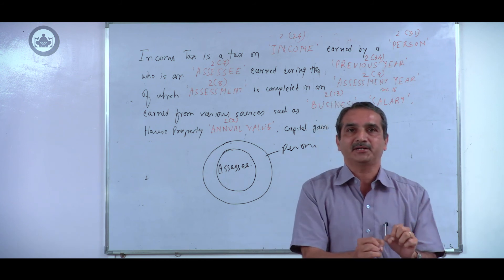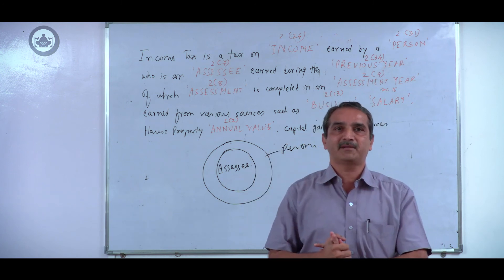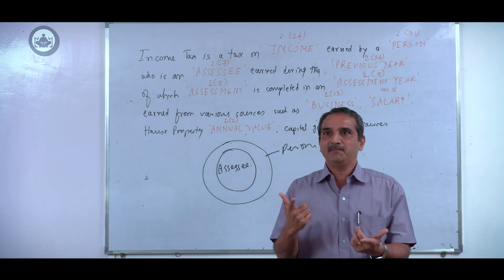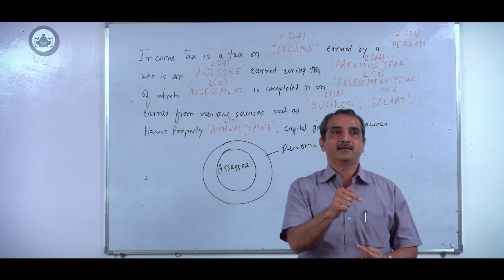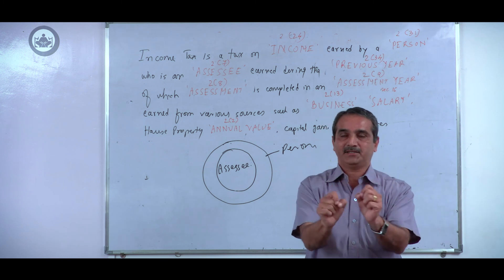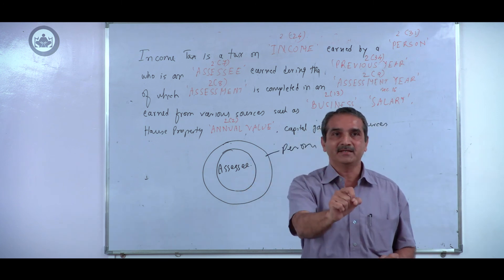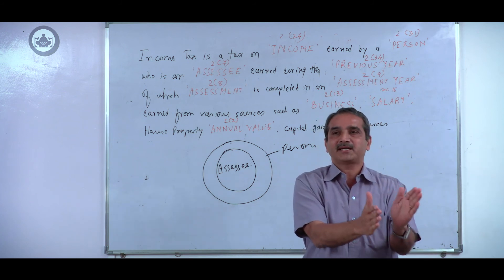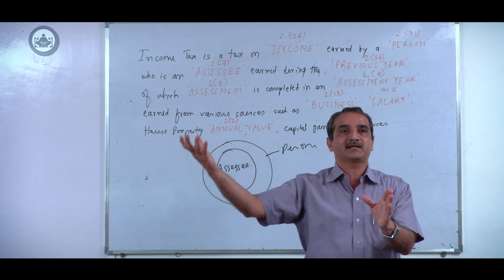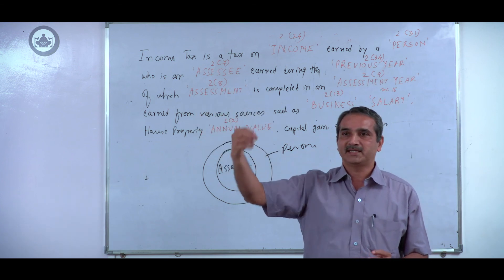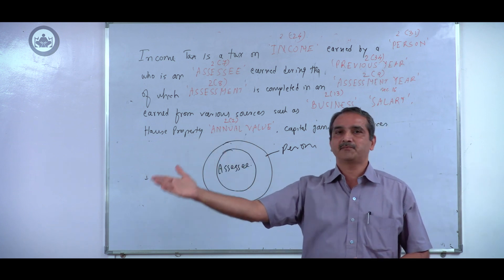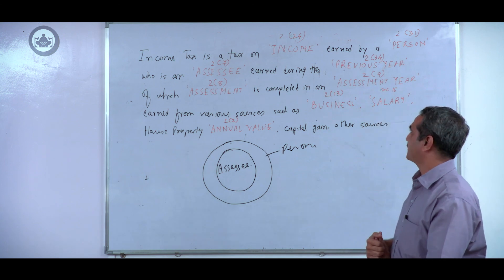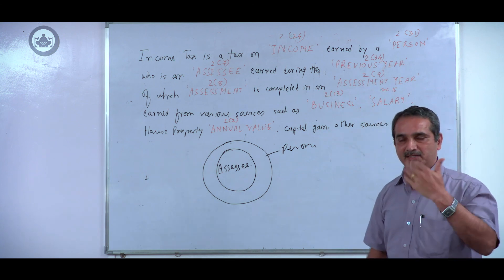Every previous year is a financial year ending on 31st March. For a business or profession set up during a given financial year — say a new activity started in November 2016 — the first previous year will be less than one complete year, running from the date of starting the activity to the immediately following 31st March. Similarly, if rent starts from 1st November, the first previous year runs from 1st November 2016 to 31st March 2017, and that income is assessed in the assessment year.